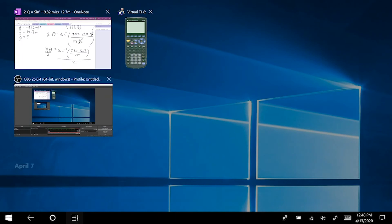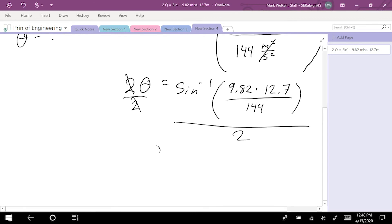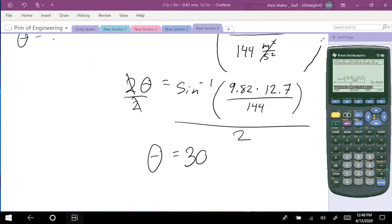So calculator-wise, we enter it in as arc sine of 9.82 times 12.7 divided by 144, and then we divide all of that by 2, and when we enter that, our theta is basically 30 degrees.